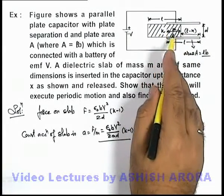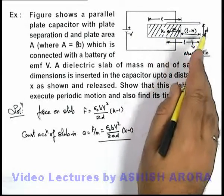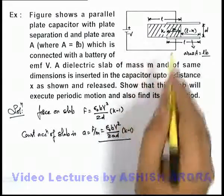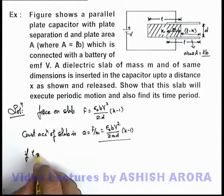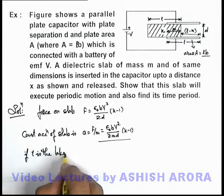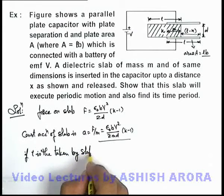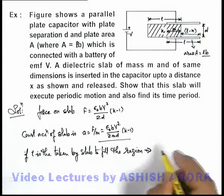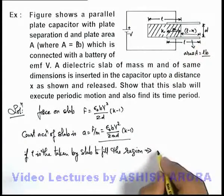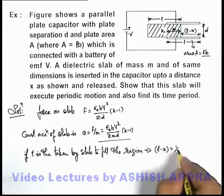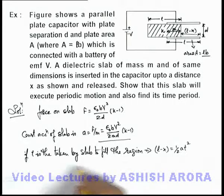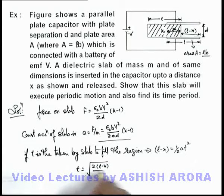If we wish to find out the total time period of oscillation — the slab going in one direction and coming back to the same position — we can find the time required for the dielectric slab to fill the complete space between the plates. The time period will be 4 times this value, because the slab takes the same time going in the other direction, coming back, and returning to the initial position. If t is the time taken by the slab to fill the region, then the distance (l minus x) equals one-half a t squared.